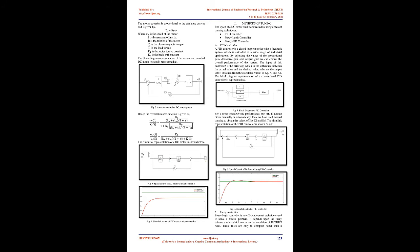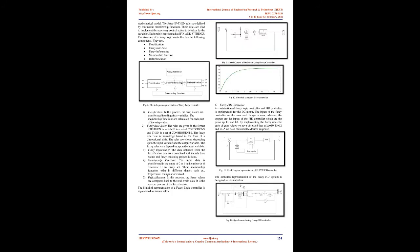The back emf of the motor is proportional to the speed of the motor and is given by Eb equals Kb omega. The motor torque is proportional to the armature current and is given by Te equals Kt Ia, where omega is the speed of the motor, J is the moment of inertia, B is the friction of the motor, Te is the electromagnetic torque, Tl is the load torque, Kt is the motor torque constant, Kb is the back emf constant. The block diagram representation of the armature controlled DC motor system is represented as shown.